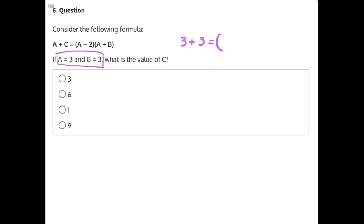Equals, open parentheses, A is equal to 3 minus 2 times, A is also equal to 3, plus B. B is our unknown variable. That is what we are solving for.